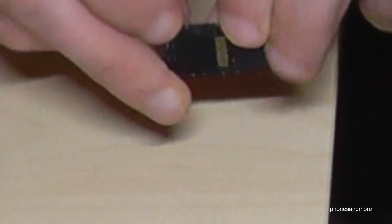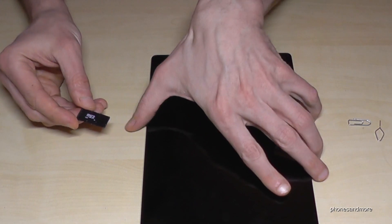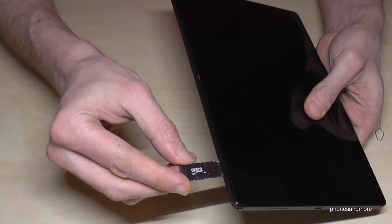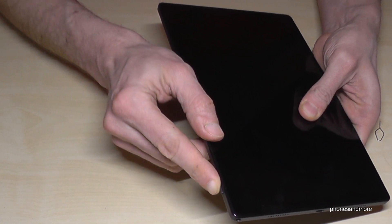The contacts are below. Then just take the tray and insert it like this.